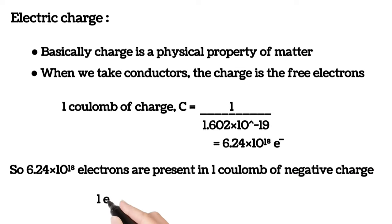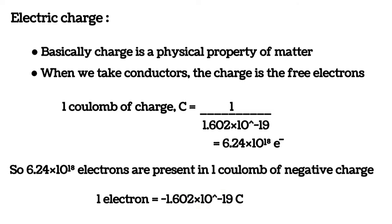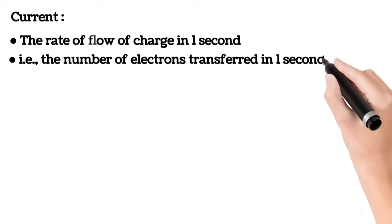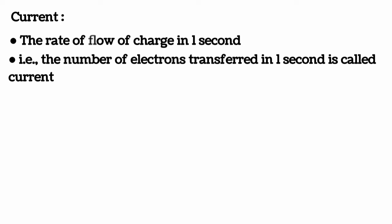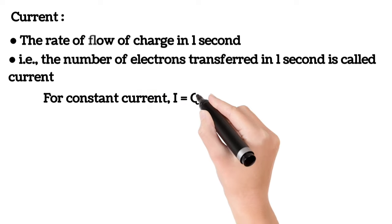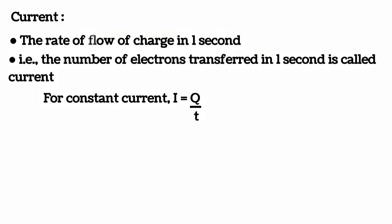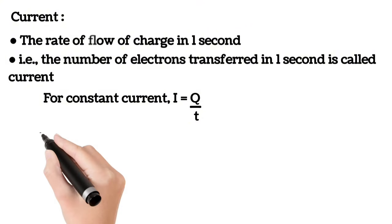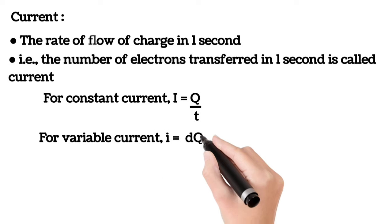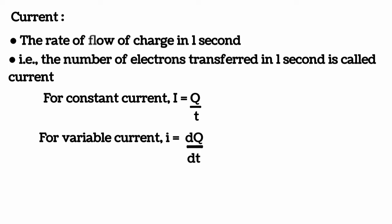Current is defined as the net flow of charge in one second — that is, the number of electrons transferred from one point to another in one second. For constant current, I = Q/t, meaning if we measure current at any point in the circuit it will be the same. For variable current, i = dq/dt, meaning at a particular instant the rate of flow of charge is changing. One ampere equals one coulomb per second.